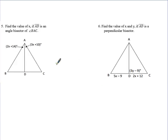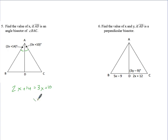Find the value of X if AD is an angle bisector of angle BAC. Since AD cuts angle BAC in half, the two smaller angles are equal — little equals little. We set the two angle expressions equal to each other, subtract 2X from both sides, then subtract 10, giving us X equals 4.